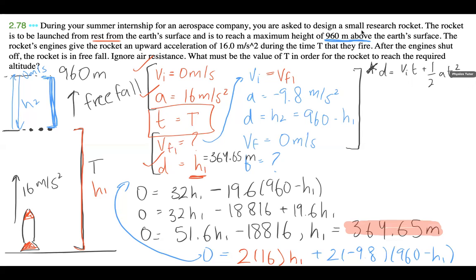And if I plug in all my values, we know that VI is zero, right? Just from here, I'm getting D is equal to half of AT squared. 364.65 is equal to half of 16 times T squared. And the T value I'm getting, just going to plug this into my calculator one more time to double check my work. And I'm getting the time is equal to 6.75 seconds.